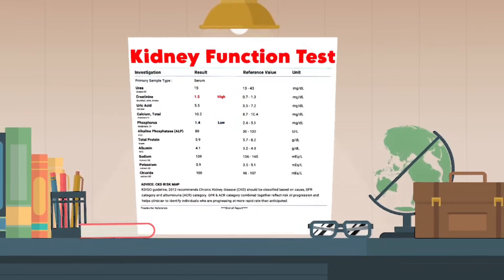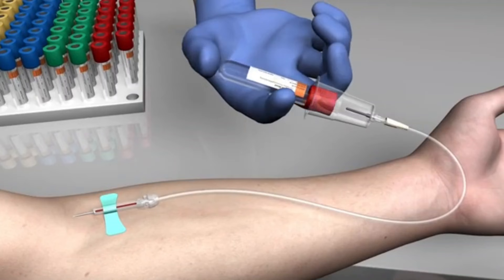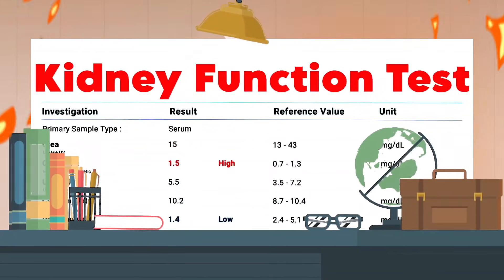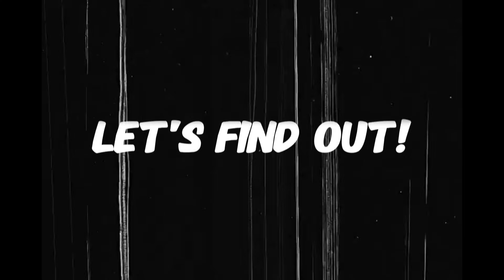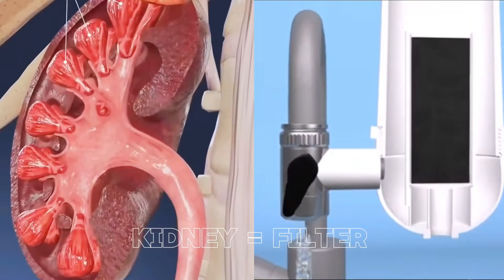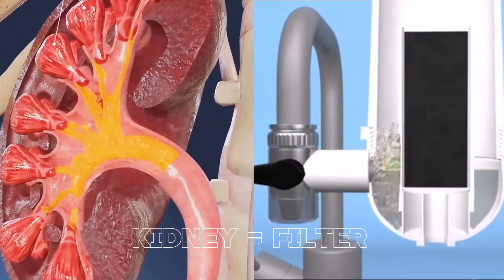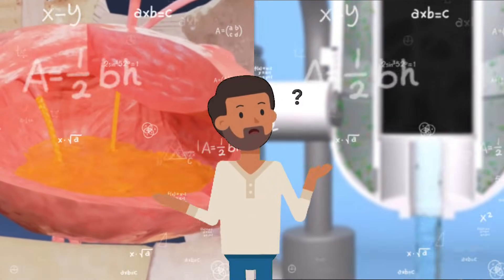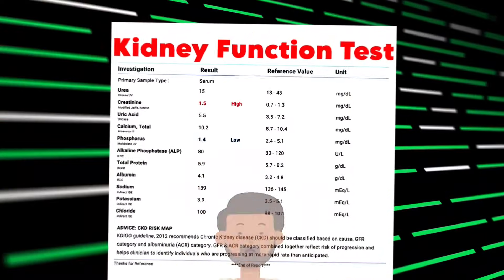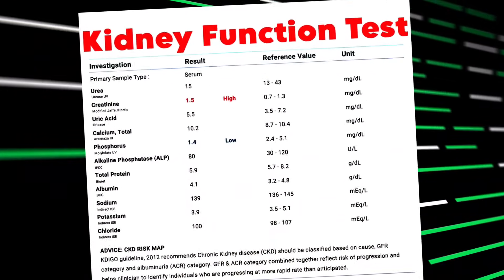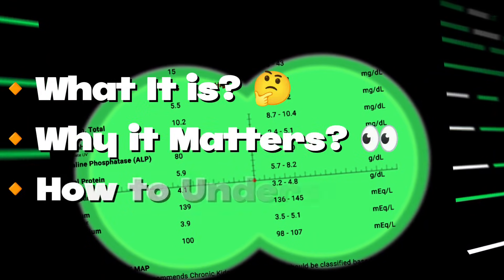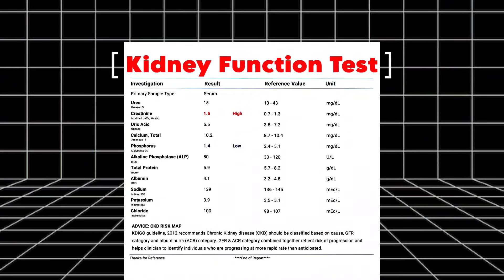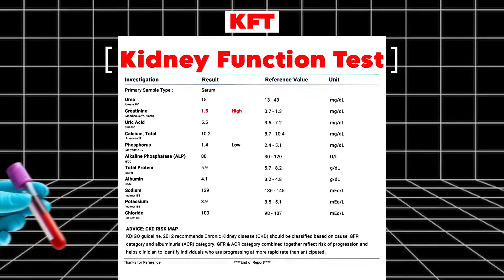You will receive a piece of paper like this after you give them a sample of your blood and urine — it's called a kidney function test. But what do all these things mean? Your kidneys are like the body's natural filters, working 24/7 to remove waste and maintain a balance of essential nutrients. That's where the kidney function test comes in. Today we'll break down what it is, why it matters, and how to understand your results.